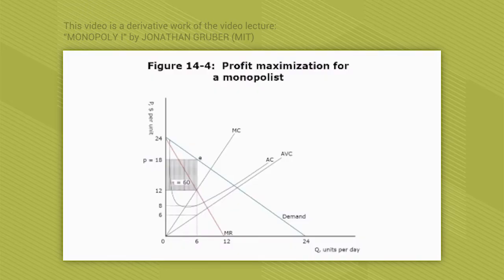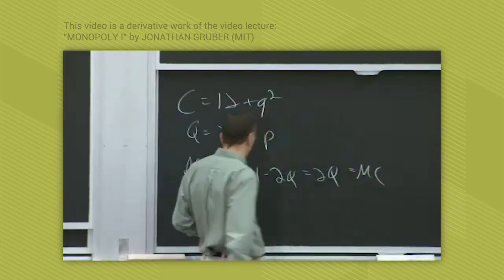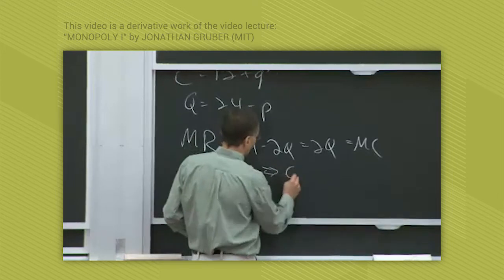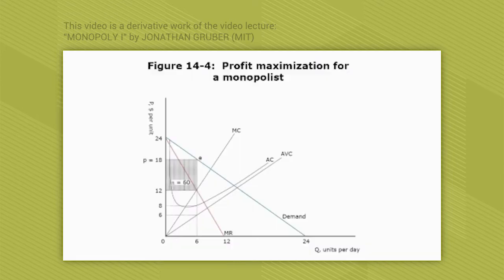So the optimization term for a monopolist is going to be where marginal revenue, which is 24 minus 2q, equals marginal cost, which is 2q, or q equals 6. That's going to be the optimal production level for the monopolist. So we can see that graphically.